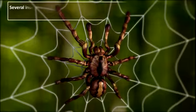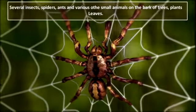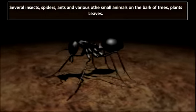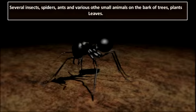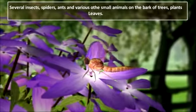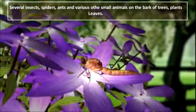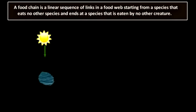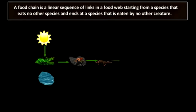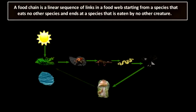Many insects, spiders, ants, and various other small animals have their habitats on the bark of the trees, plants, and leaves. Organisms are often eaten by other ones. For example, grass is eaten by insects, which in turn are taken by the frog. The frog is consumed by snakes. This is known as a food chain.